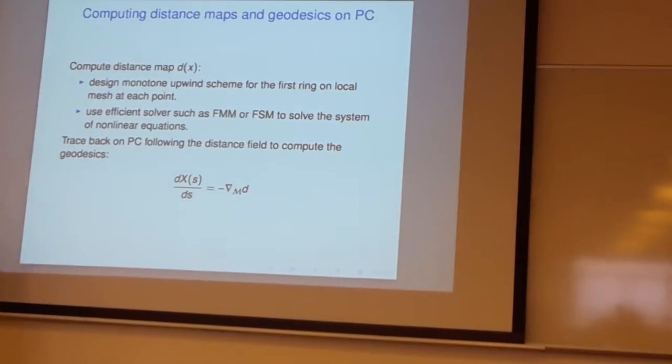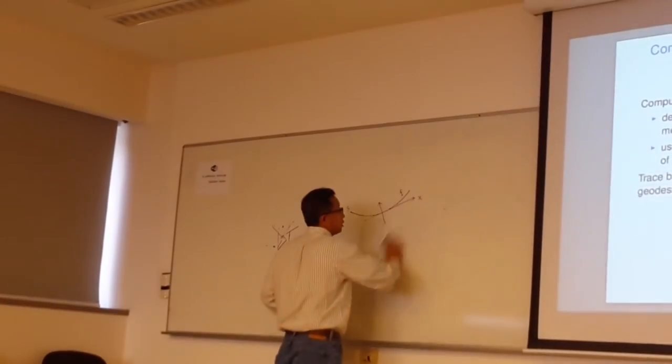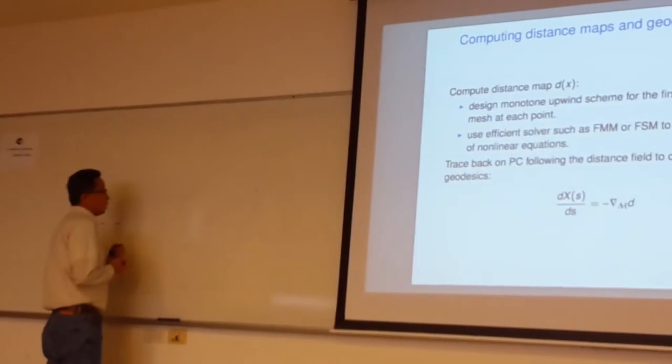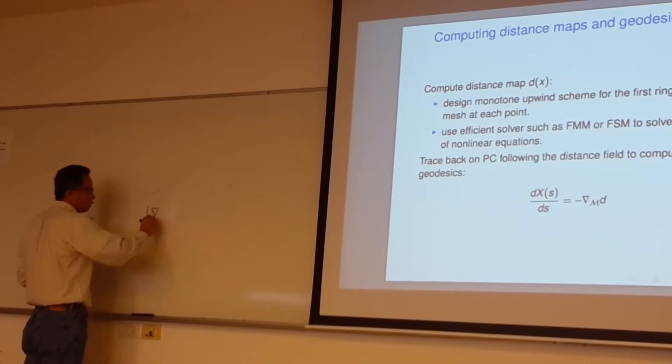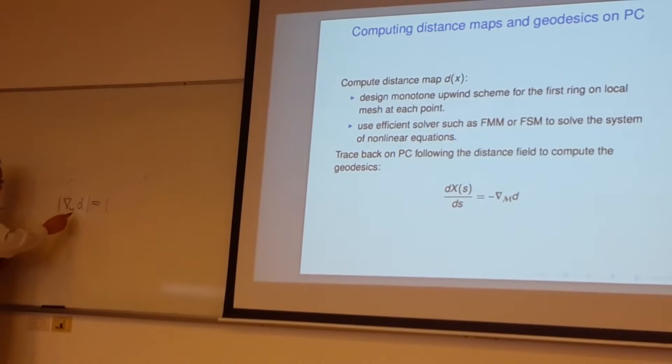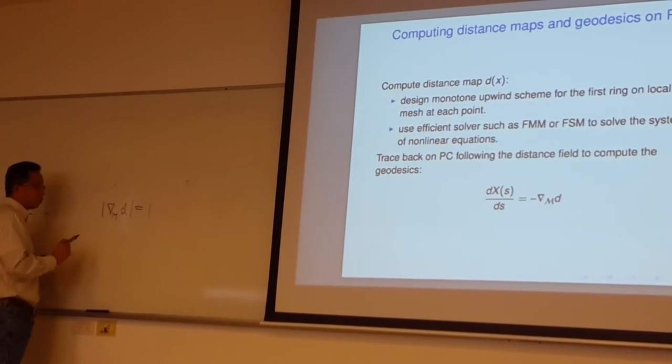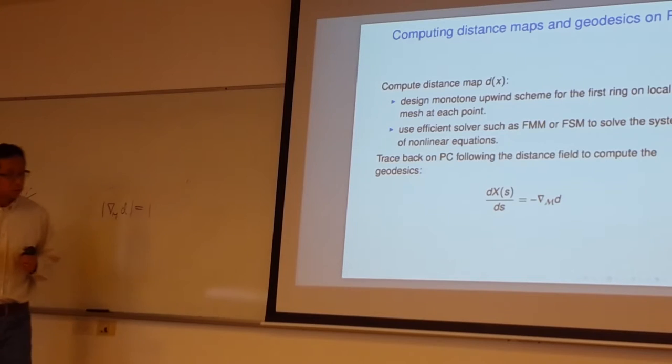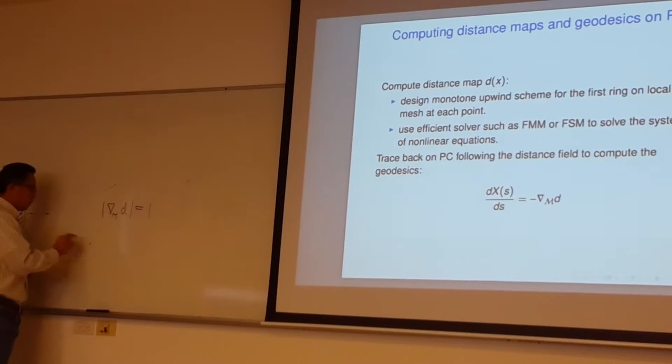For solving the eikonal equation - this is a nonlinear equation. It just says the norm of the gradient with this matrix is one. So you want to find this distance function. The most important thing is you need to find an upwind monotone scheme. Then you can use fast marching or fast sweeping to do that.